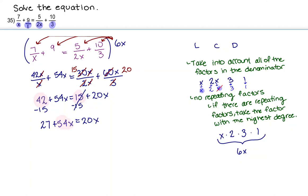And now I can combine 54x with 20x. So I'm going to subtract 54x from this side and 54x from this side. Leaving me with 27 is equal to negative 34x.